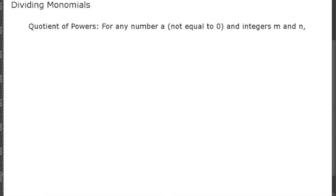In this video I'm going to explain how to divide monomials. Our first rule is the quotient of a power, which says that for any number a where a does not equal zero and integers m and n, a to the m over a to the n equals a to the m minus n.